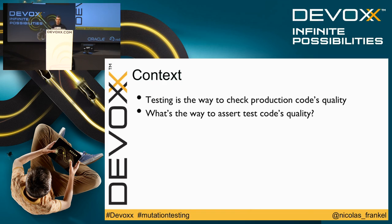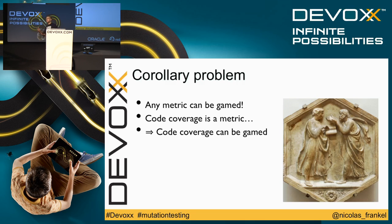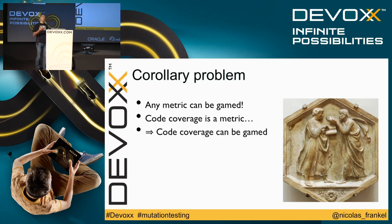So, for the subject at hand, it's about mutation testing. And the context is the following: you write tests because you want to check your production code's quality. But how can you assert your testing code's quality? I've noticed some problems. The first is you rely on code coverage, and you will say, hey, my code coverage is higher than yours, so my testing code is better. The problem with that is that code coverage is a metric, and any metric can be gamed. So code coverage can be gamed.